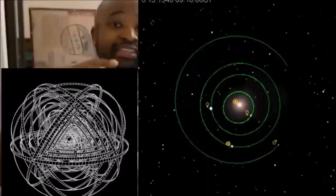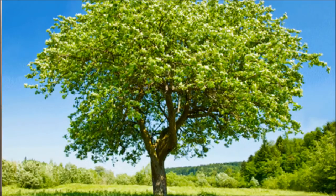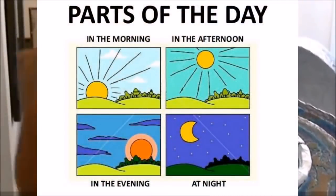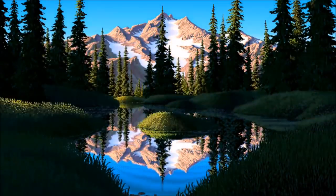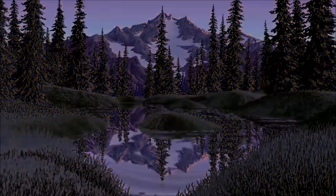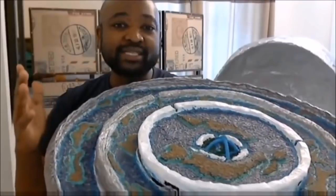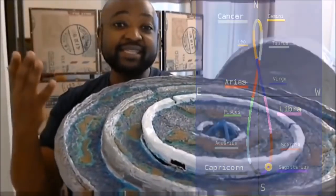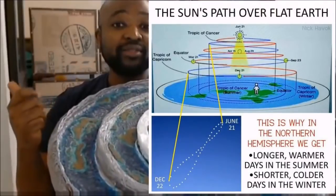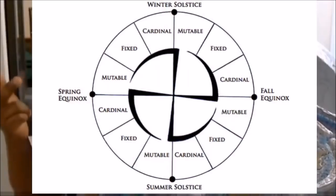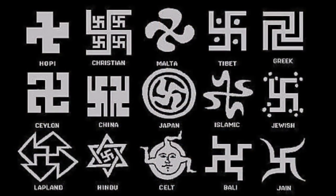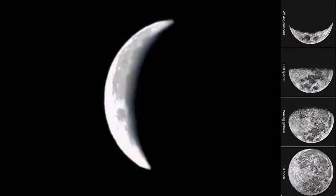These four things are what create our four seasons: summer, autumn, winter, and spring. We also know about the four times of the day that we experience every day: sunrise, midday, sunset, and midnight. Four again — no coincidences, no mistakes. We've got the four paths that the sun takes along the ecliptic during the course of the year: the summer solstice, the winter solstice, the fall equinox, and the spring equinox. The swastika that we see. What about the four phases of the moon? The waxing, waning, full moon, and new moon — four, again.